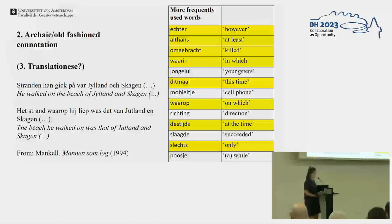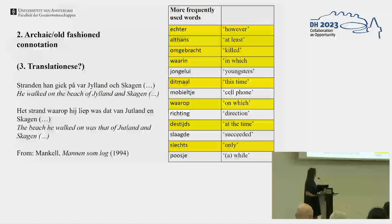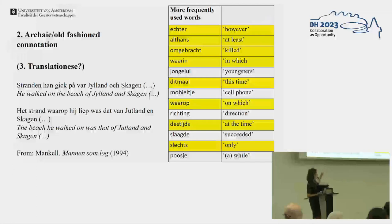I picked one example to illustrate translationese. The first sentence is the original Swedish — literally meaning something like 'he walked on the beach of Jylland and Skagen.' In the Dutch translation, it says something like 'the beach he walked on was that of Jylland and Skagen.' I think that's very marked — it's a form of translationese, and you can also see it in the words.